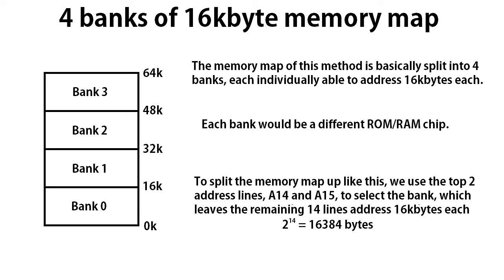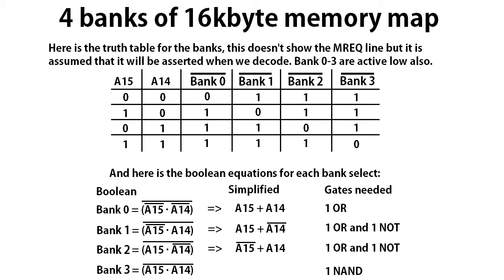With 4 banks of 16KB of memory in the memory map, we're splitting the whole memory map into 4 banks of 16 kilobytes each. You can mix and match whether you want them to be ROM or RAM — basically you'd like some of each, otherwise it would be useless. You'd be using the top two address lines, A14 and A15, to select the bank being used, giving you 16 kilobytes for each bank. I have shown below a truth table showing the logic states needed to make each bank active.